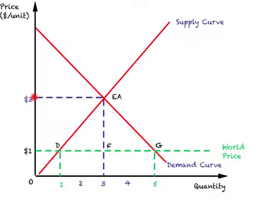We know this is equilibrium in autarky: the price paid by buyers and sellers is three dollars and the quantity traded is three units. Now suppose, from a position of autarky, the country decides to engage in foreign trade. In this case the product is being sold in the world market for one dollar, whereas with no trade the same product was being sold domestically for three dollars. So what this country will do is start importing this product, because the price is lower in the world market.